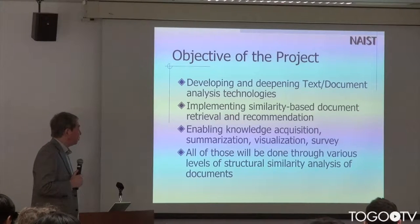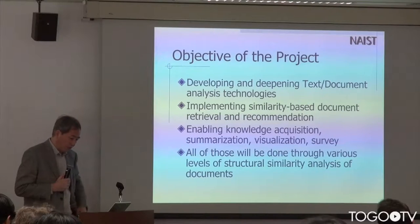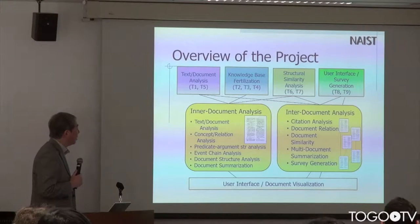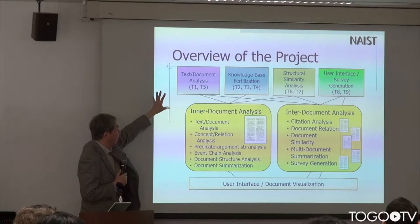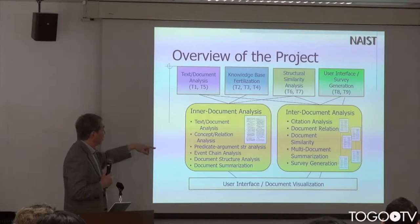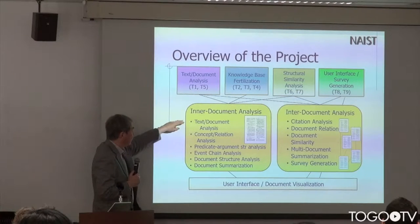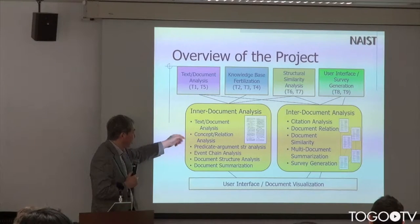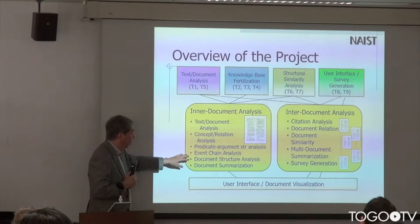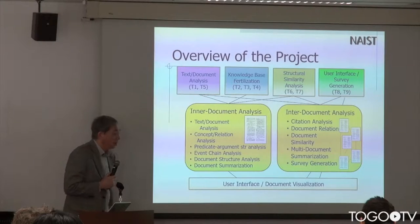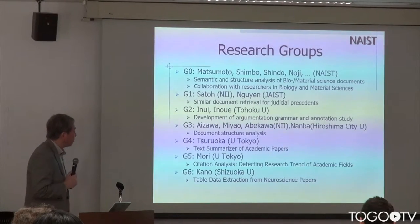All of those developments will be done through various levels of structural similarity we're going to define related to documents. We like to analyze documents at the intra-document level and inter-document level. By intra-document level, we mean document analysis, coreference extraction, predicate-argument structure analysis, and event chains. By doing that, we can make structural analysis of a document. By inter-document analysis, we are talking about citation and similarity between documents.